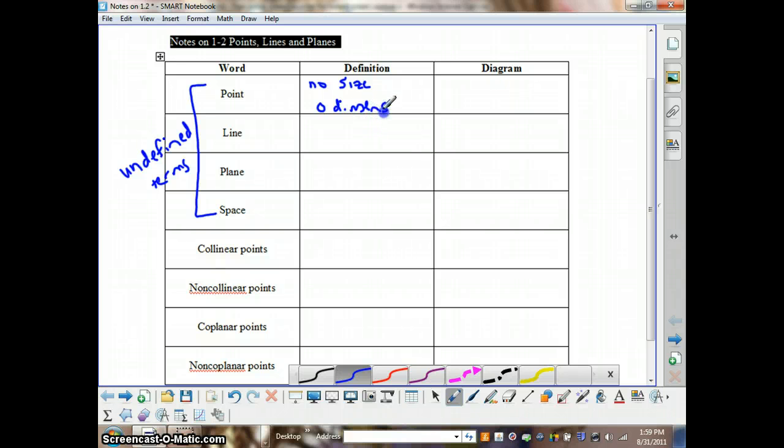So if you think about drawing a point, we really can't draw a point if it has no size, but in a diagram we draw a dot and then we indicate that this would be point A by putting a capital letter A there.